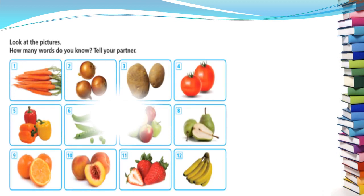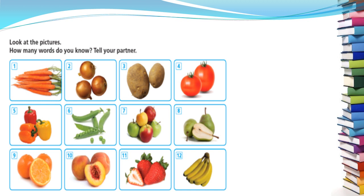Now let's move into the third exercise. Look at the picture — how many words do you know? Tell your partner. We have 12 pictures and I ask you to tell me what they are. Number one: carrots. We say carrots with an S because we don't have only one carrot, we have many.